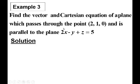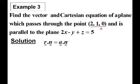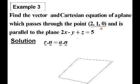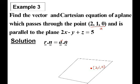From the question, we are given the point (2, 1, 0), so this is our point A. We need to find the normal vector for our plane. Let's illustrate this example into a diagram. This is the plane we need to find, with point A at (2, 1, 0) on the plane. We already have A and we need to find the normal vector N.